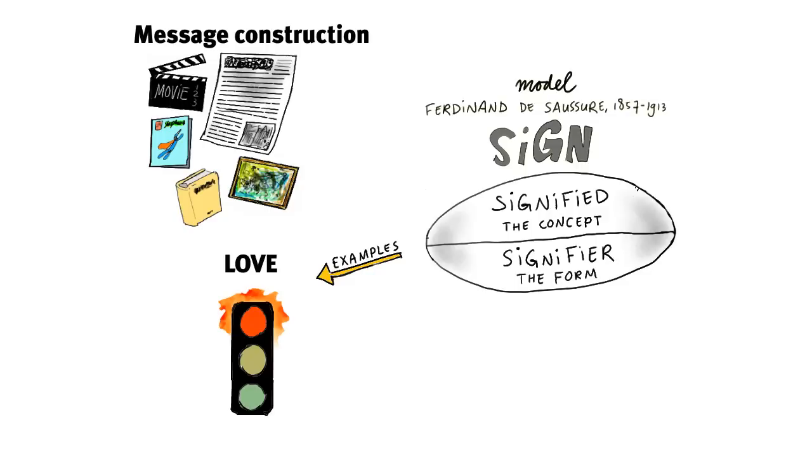If we take a traffic light, the signifier is a red light hanging over the road. The signified is the idea that you have to stop. But the process of giving meaning to the sign, in other words, the signification, is not the same for everyone.